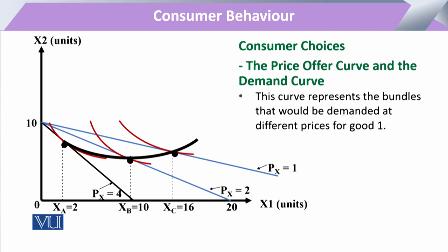When we draw this in the form of the indifference curve, we can see that the consumer was having this original budget line and on this original budget line the consumer was on this indifference curve. When the price of the commodity decreases, the slope of the budget line expands and the consumer moves to a higher indifference curve, and again with a further decrease it shifts further.